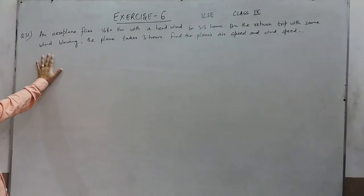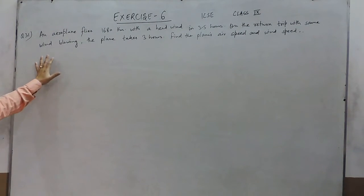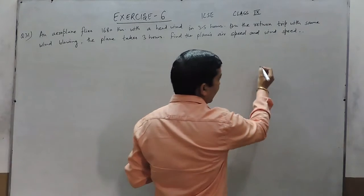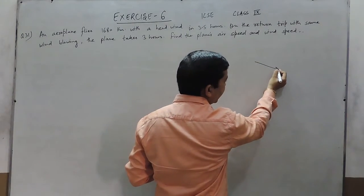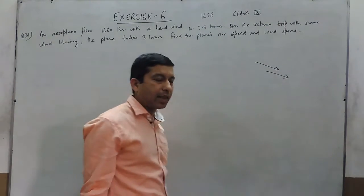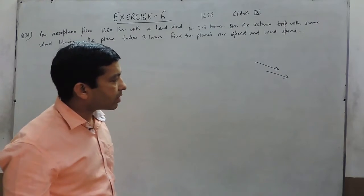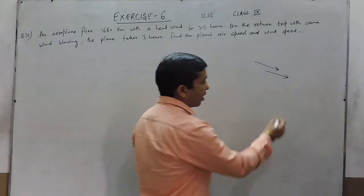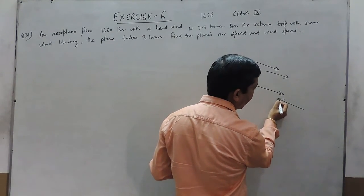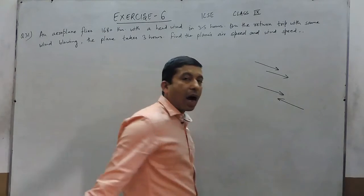Hello everyone. Question number 31 is exactly with the same context as question number 29 and 30. The only difference is: when the boat is going in this direction and water is also in the same direction, it is the downstream. When the boat is going in this direction and water is going in this direction, this is the upstream.